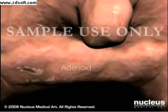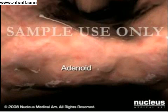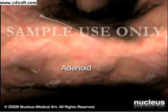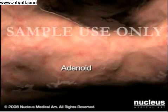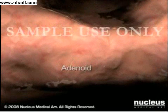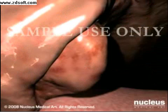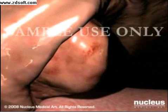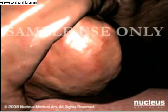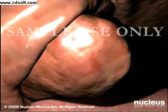The adenoids, located above and behind the soft palate, play a similar role. The tonsils often become enlarged and inflamed when fighting off an infection.